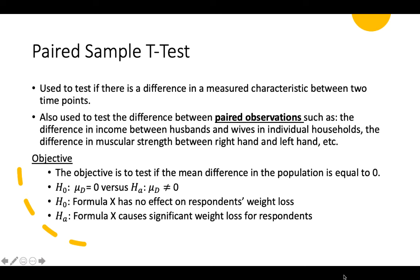We use the test if there's a difference in the measured characteristics between two points of time — like time one or time two, before training and after training, before taking a hypertension drug and after taking the hypertension drug, before consuming a diet pill and after consuming a diet pill. You also use it to test effectiveness — before implementing a policy and after implementing a policy. That's how you use paired sample T.